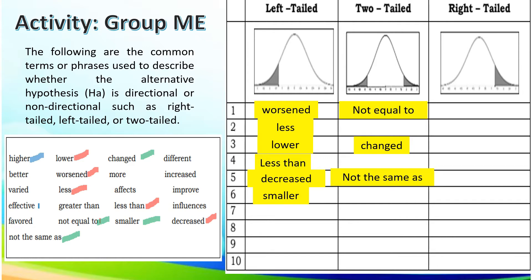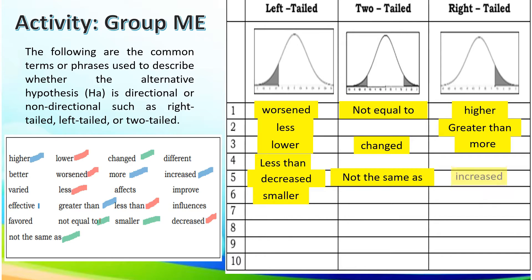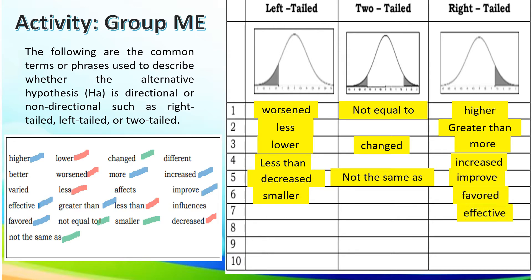Higher falls under right-tailed. Greater than also falls under right-tailed. More, increased, improved, favored, and effective are all under right-tailed.